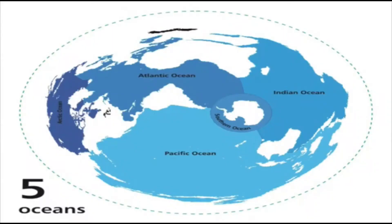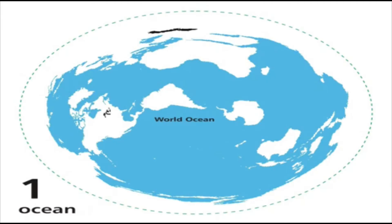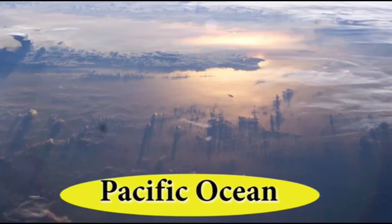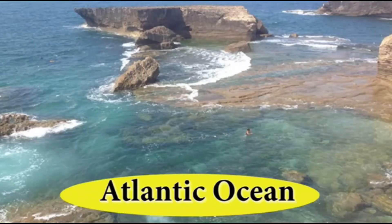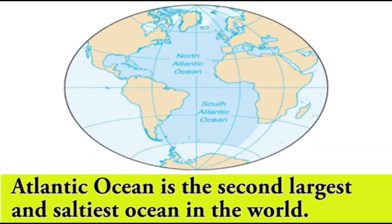There are five oceans in the world. Seventy-one percent of the surface of the Earth is covered by water, consisting of oceans and seas. The salt water masses located among the continents are called oceans. The Pacific Ocean is the largest ocean, covering more than 30 percent of the Earth. The Atlantic Ocean is the second largest ocean in the world.